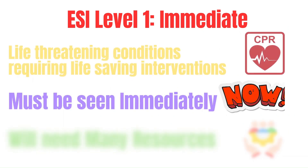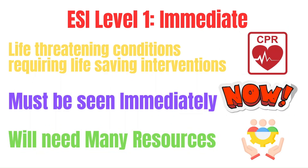For an ESI level one, known as immediate, it is assigned to patients with life-threatening conditions requiring immediate interventions. These patients should be seen immediately and will need many resources. Examples include cardiac and respiratory arrest, severe trauma, severe burns, active severe hemorrhage, and acute myocardial infarction. These patients need to be prioritized above all other patients in the ER.